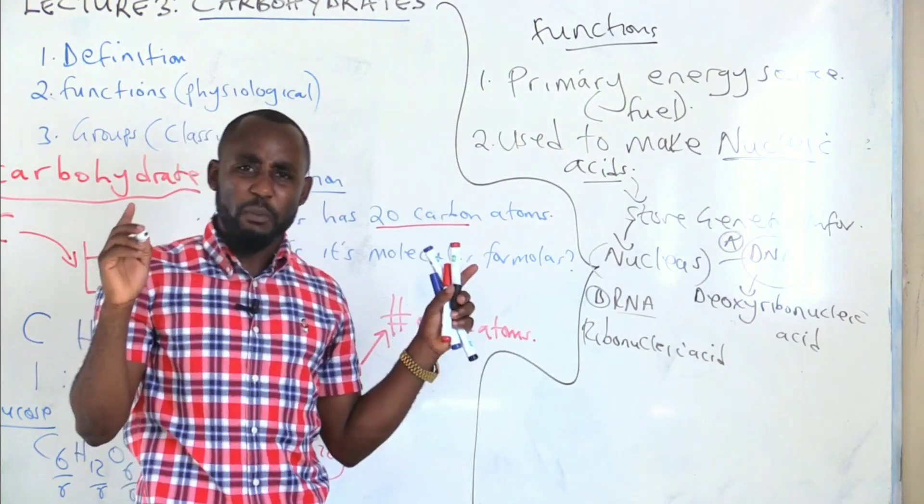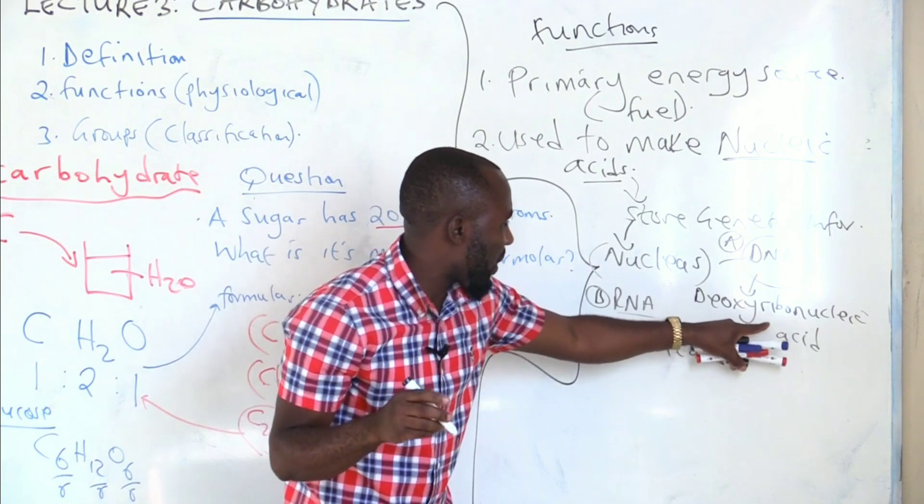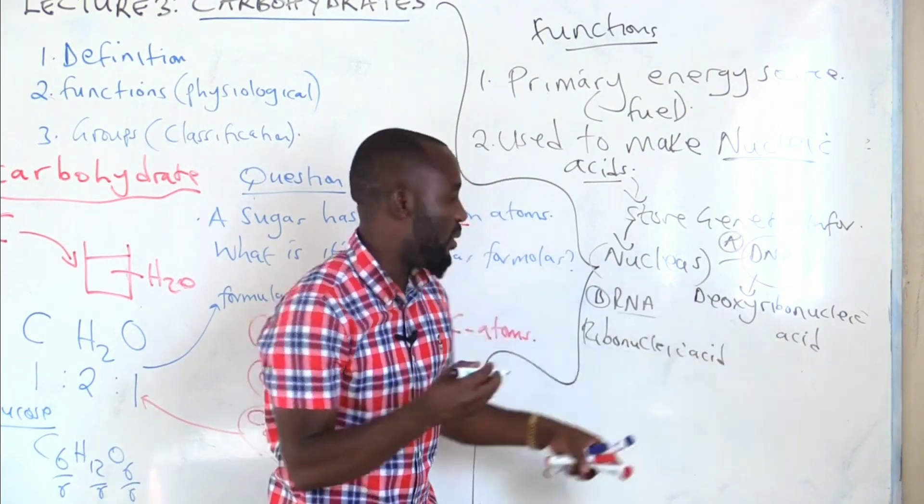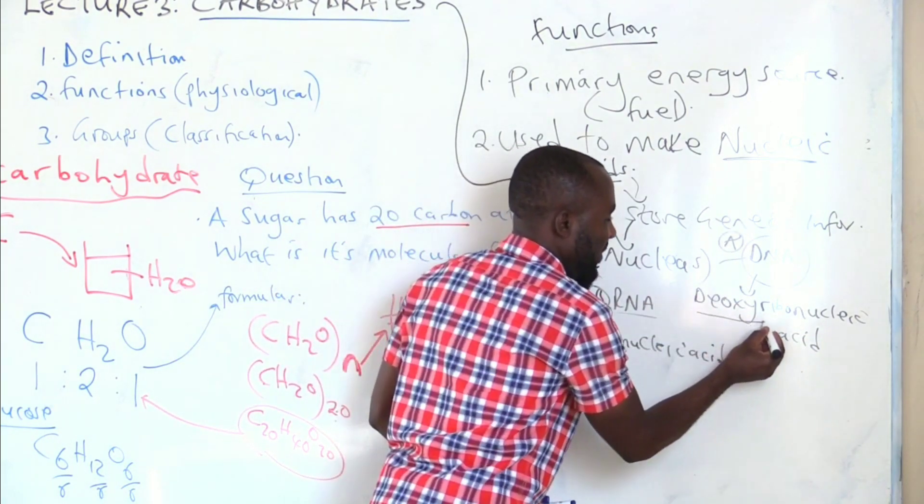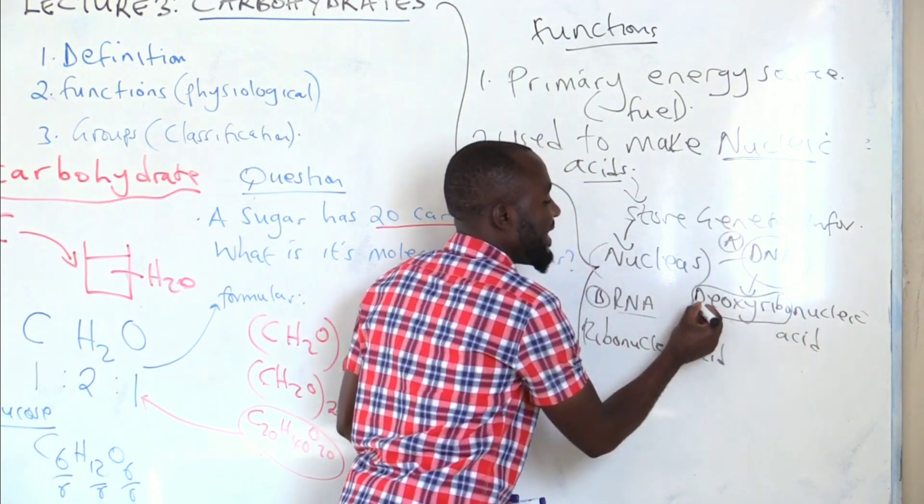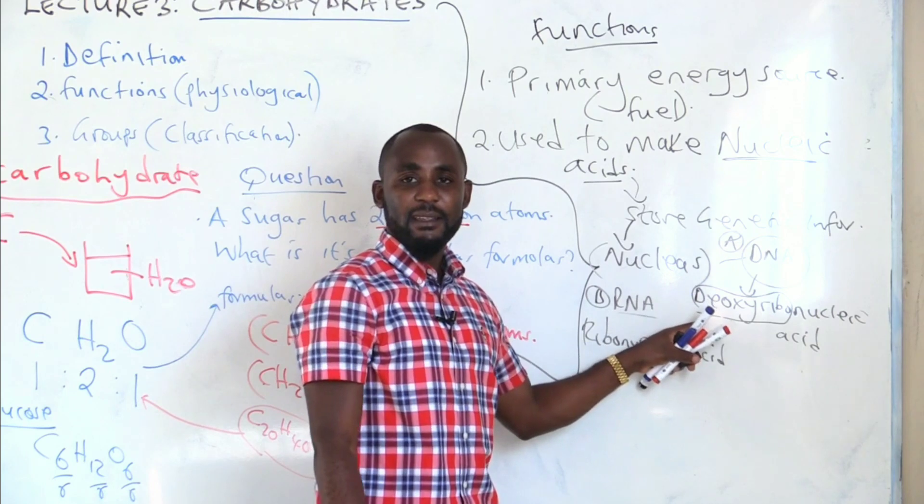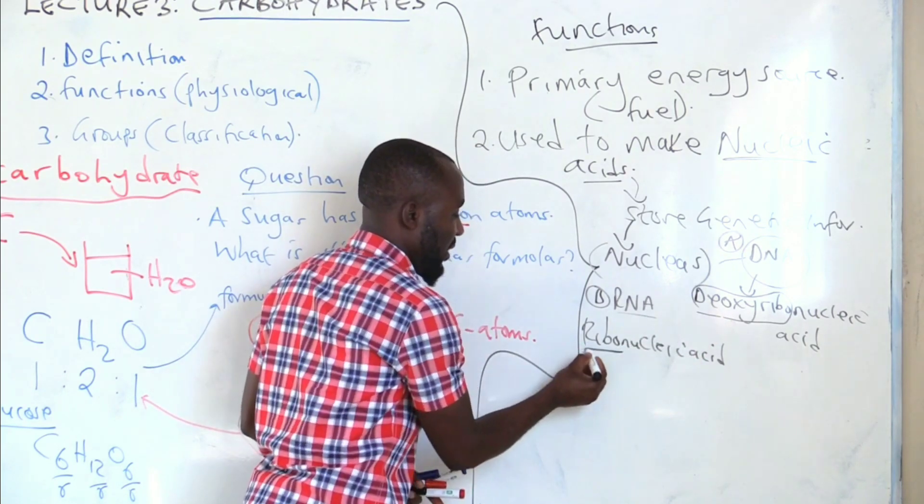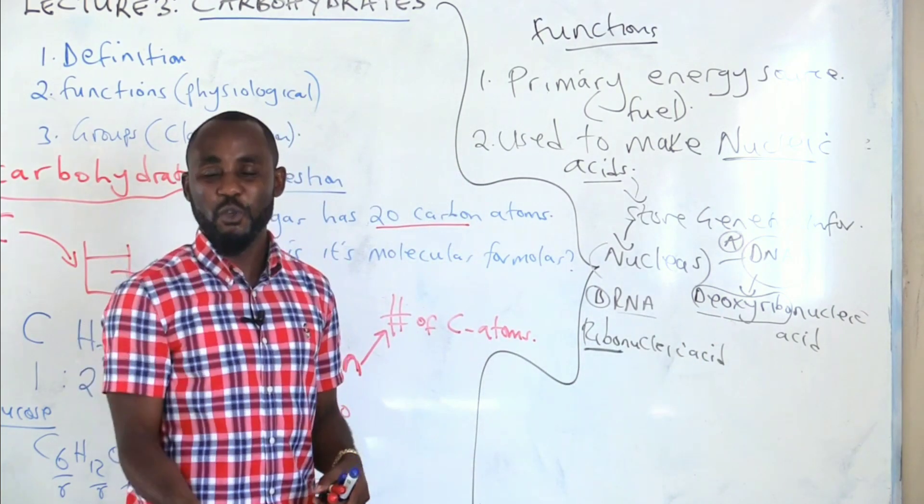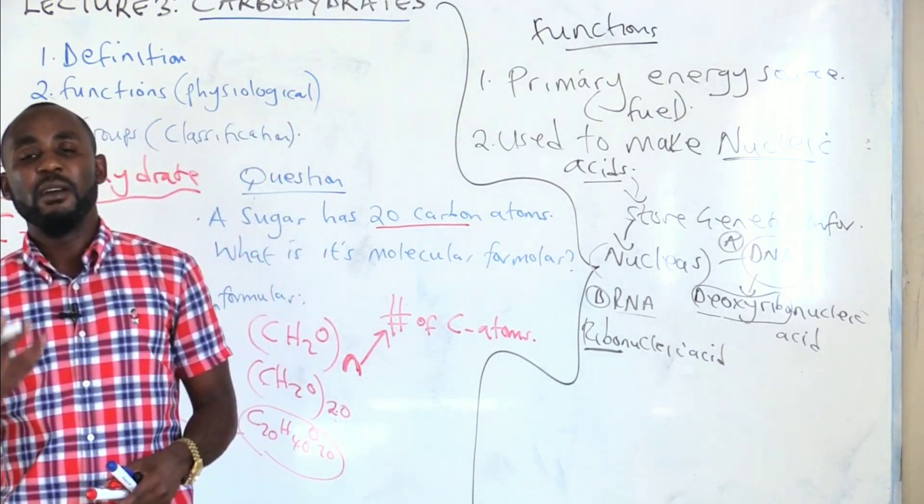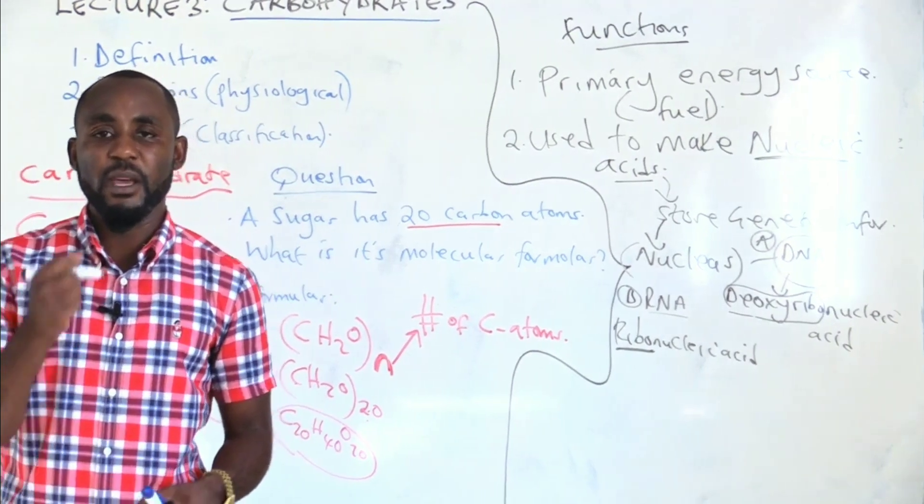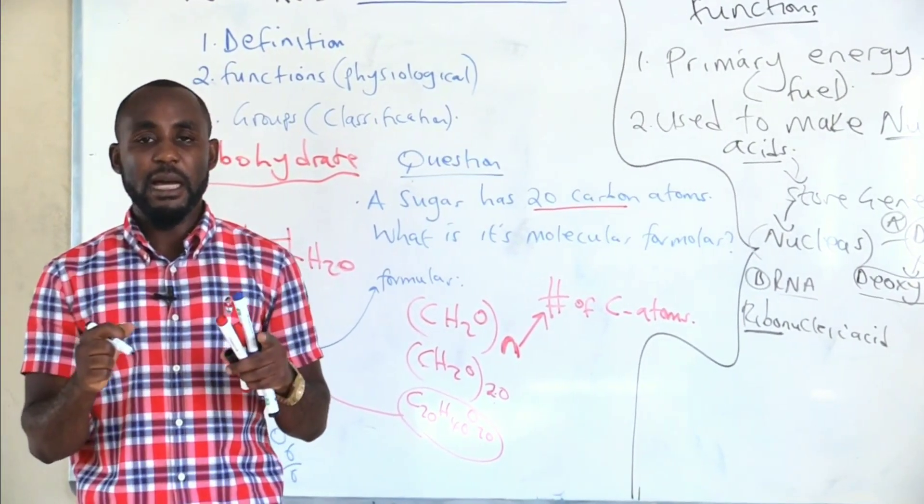What are those nucleic acids? DNA, which is deoxyribonucleic acid; RNA, ribonucleic acid. If you look at the name, the complete name, deoxyribonucleic acid—this name is coming from the fact that we use a deoxyribose sugar to make DNA. Even this one, ribo, because we use the ribose sugar. That's why we are saying we use carbohydrates to make DNA and RNA.